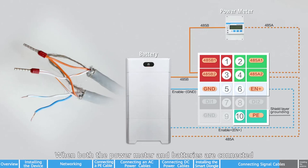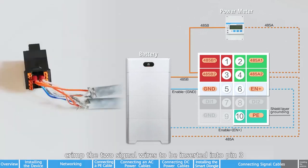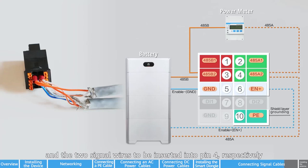When both the power meter and batteries are connected, crimp the two signal wires to be inserted into pin 3 and the two signal wires to be inserted into pin 4, respectively.